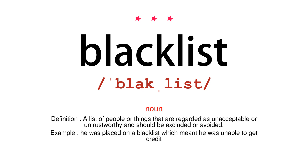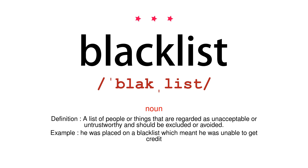Noun. Definition: a list of people or things that are regarded as unacceptable or untrustworthy and should be excluded or avoided. Example: he was placed on a blacklist which meant he was unable to get credit.